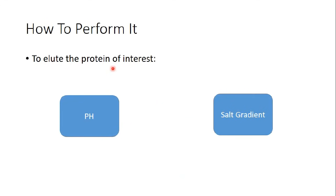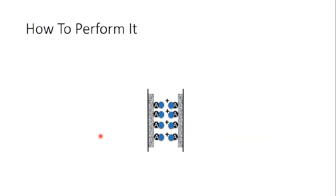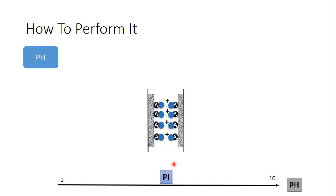The question is: how do we elute my protein from the column? There are two methods: pH gradient or salt gradient. For pH elution — in cation exchange chromatography the protein is positively charged, meaning the pH of the solution is lower than the pI of the protein. If we simply apply a solution with a pH equal to the pI of the protein, the protein will hold a net charge of zero.